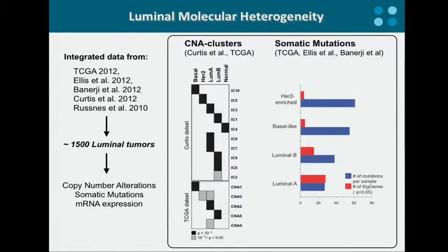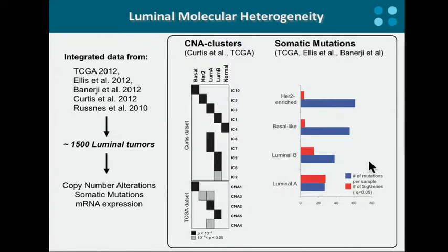A similar picture emerged when we looked at somatic mutation. HER2 and basal are characterized by the highest number of mutations per sample, on average indicated here by the blue bars, while luminal B and especially luminal A are characterized by the highest number of genes mutated more frequently than expected by chance, indicated here by the red bars. So these tell us that these subtypes have a great heterogeneity at the molecular level.